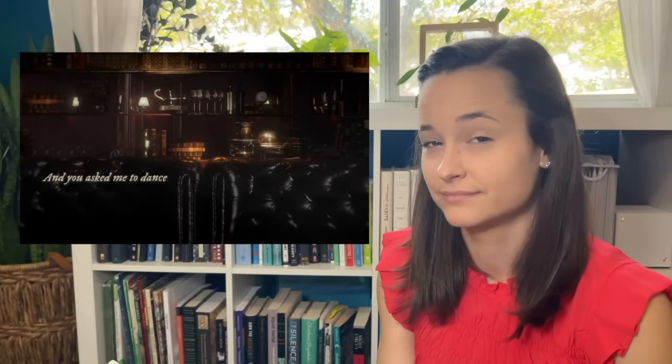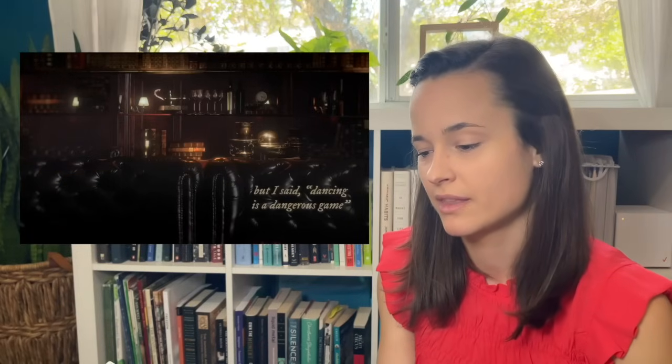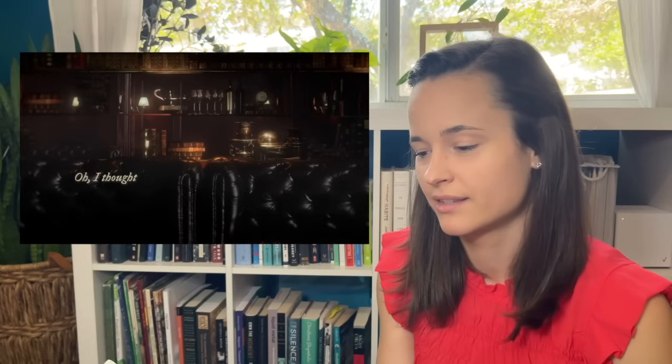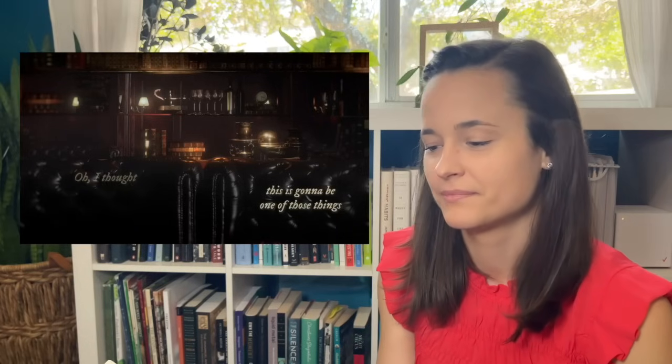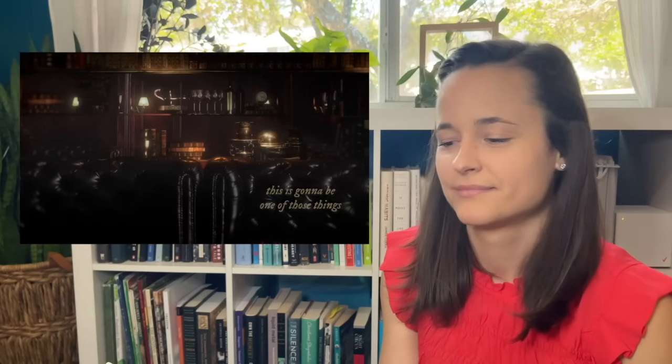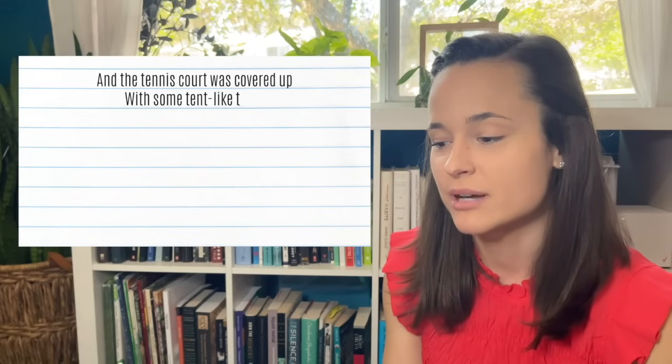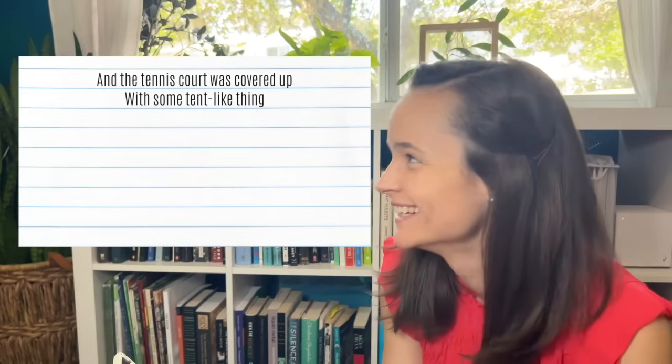Okay, I have a feeling we're going to need more of the song to get the story, but let's just see what the writing is telling us. The tennis court was covered up with some tent-like thing. Honestly, this just gives me thoughts of when I lived in Toronto. During the winter, sports fields are covered with this bubble, tent-like thing. It's literally a tent-like thing, but it looks like a little bubble, and that's what it makes me think of.